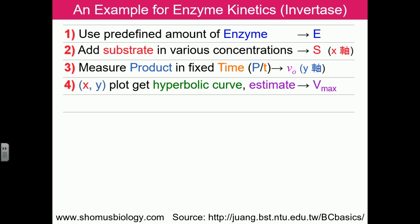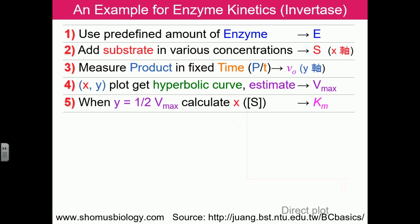We also figure out the maximum velocity the reaction can achieve. When y equals half the Vmax, we find the corresponding substrate concentration. The x-axis carries substrate concentration and the y-axis carries the velocity v₀, with Vmax at the end. The curve obtained is a hyperbolic curve.